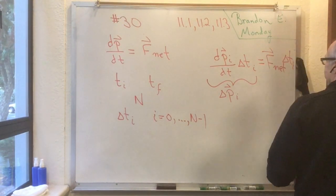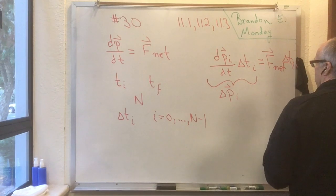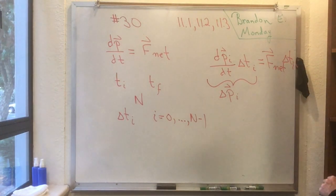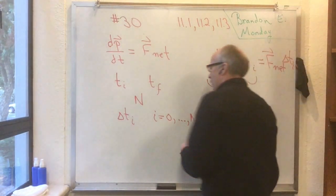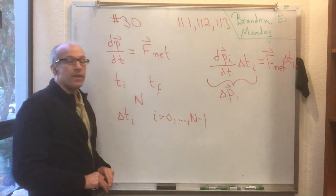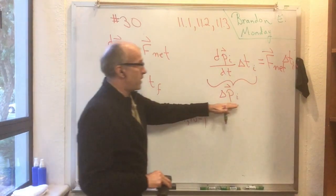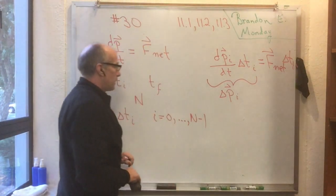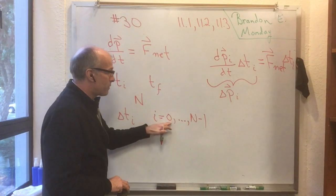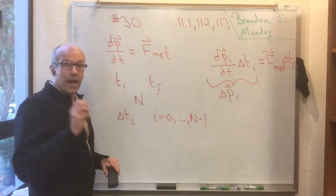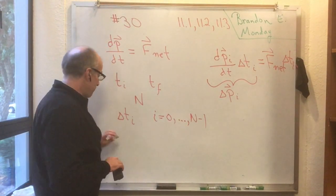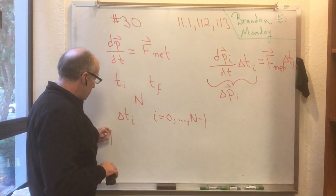So the left-hand side is the amount that p changed in that little time, delta t sub i. The right-hand side is a bit of a mess. Not really a whole lot I can do with that. Now, let's try to get the total change in p.